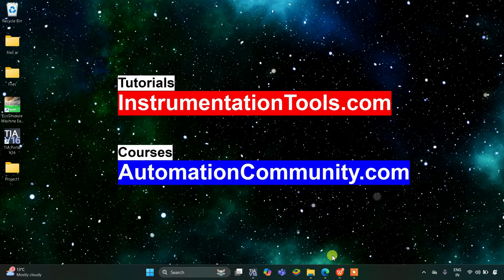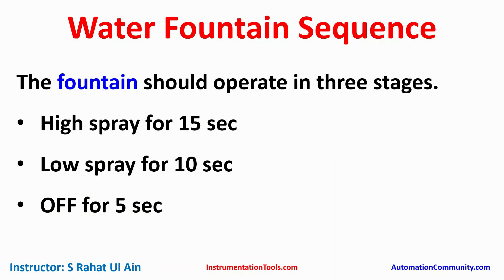Hello everyone, welcome to Automation Community. Today in this video we are going to discuss another example which will be about a water fountain sequence. The fountain should operate in three states: high spray for 15 seconds, low spray for 10 seconds, and off for 5 seconds.